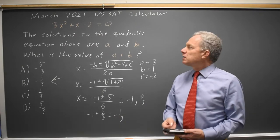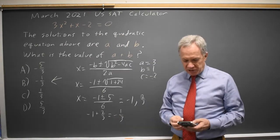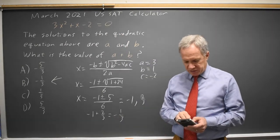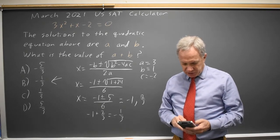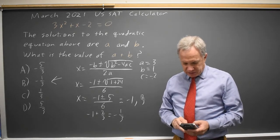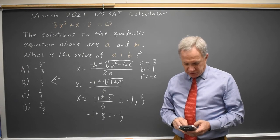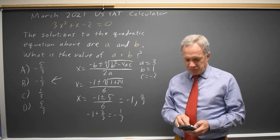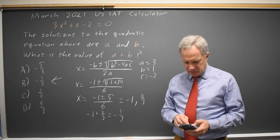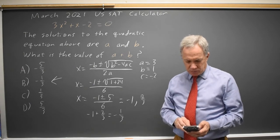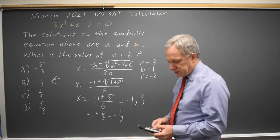Alternatively, I can graph this on my graphing calculator and find the zeros. So that's 3X squared plus X minus 2, and the zeros are 0.666.